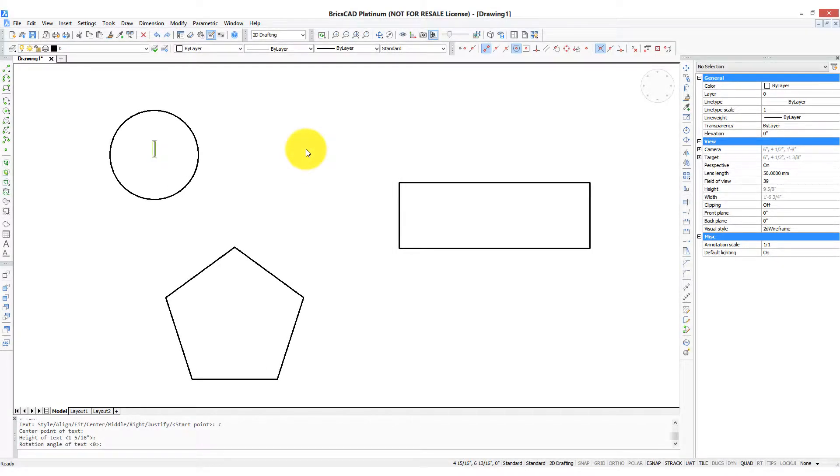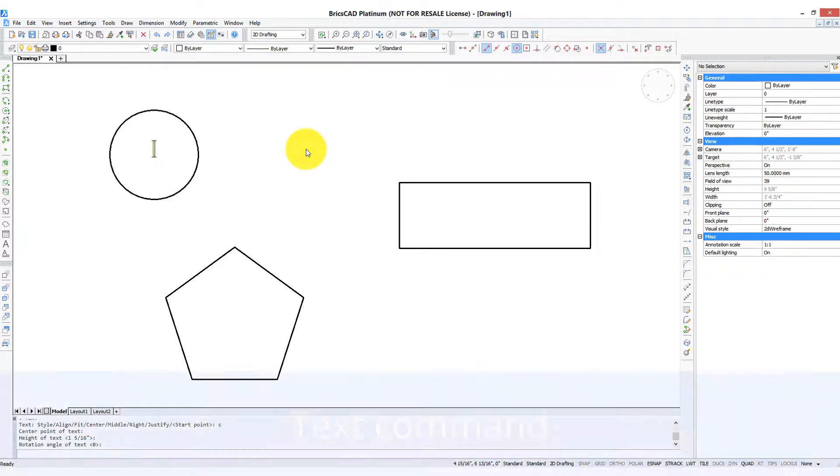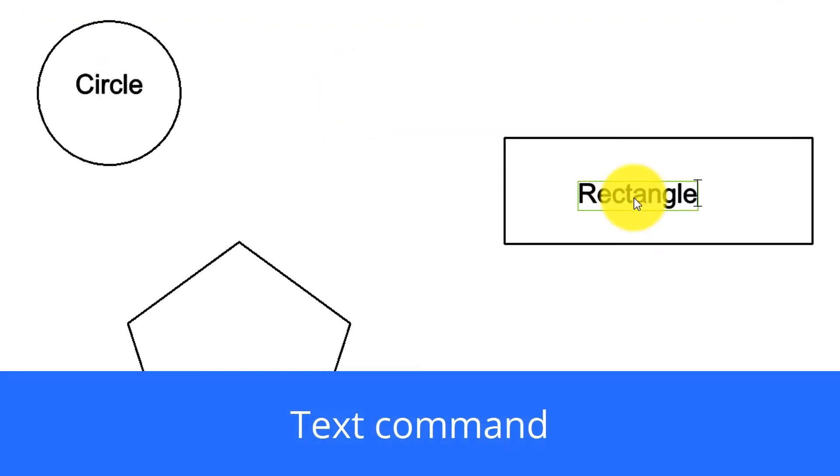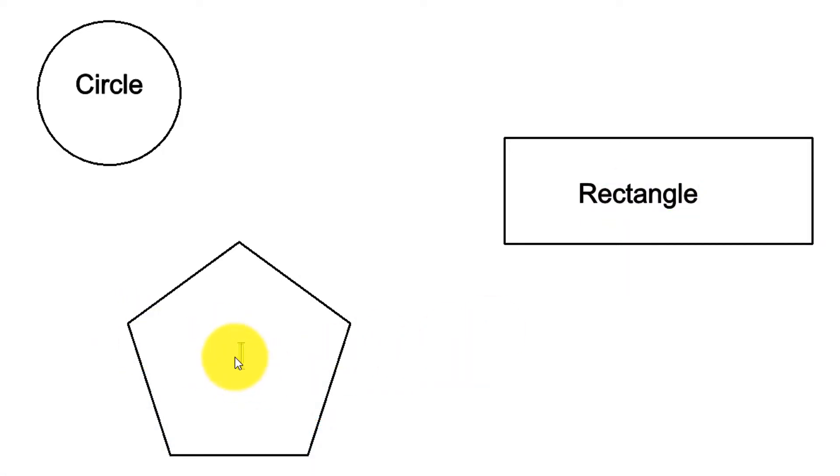BricsCAD provides you with the ability to place paragraphs of text and single lines of text. Single line text is placed with the text command and it's great for when you want to put little bits of text. At some point you're going to want to edit it and that's what this video is about.